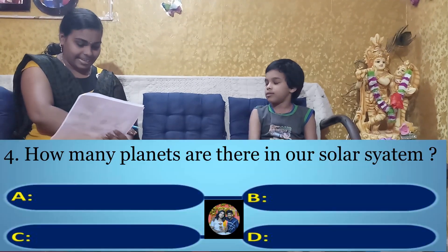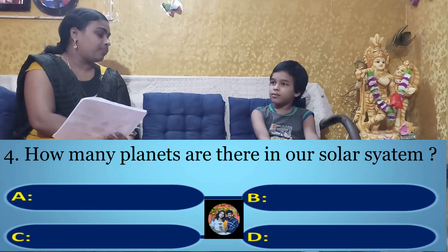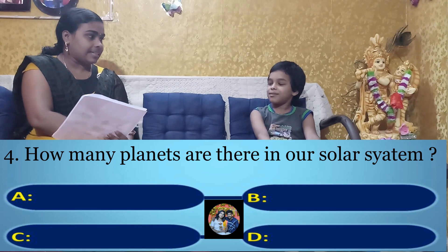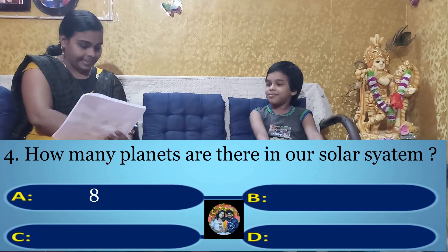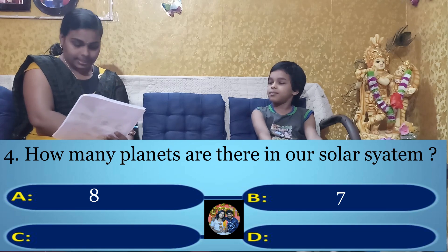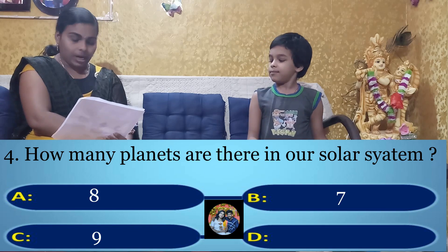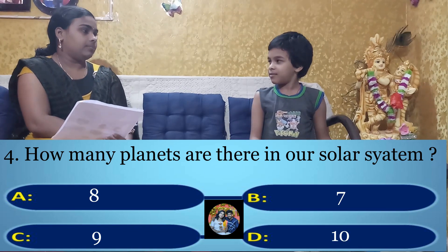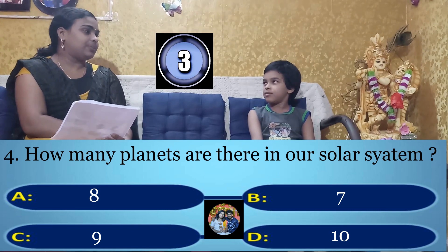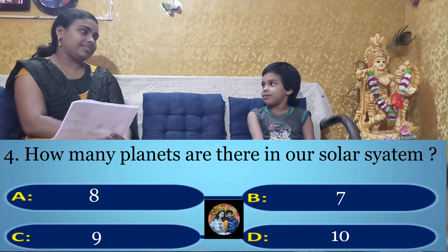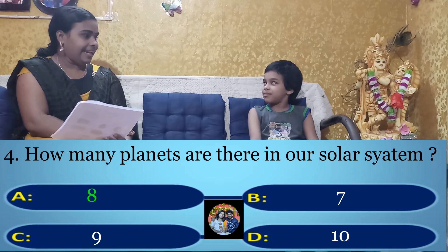Your fourth question: How many planets are there in our solar system? Option A: 8, Option B: 7, Option C: 9, Option D: 10. Your time starts now. Option A: 8. Yes, the right answer is Option A: 8.